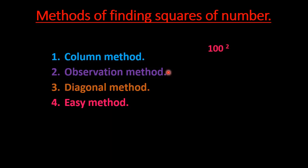First, let us find the easiest way of calculating the square of round numbers like 100, 200, 300, 400, 500. For 100², we multiply 1 × 1 = 1, and since there are two zeros, we write double of two — that is four zeros. So 100² = 10000.